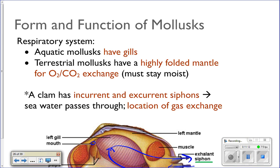The respiratory system: molluscs have gills. Aquatic molluscs all use gills to breathe. Terrestrial molluscs have their mantle highly folded, and they rely on that folded mantle for gas exchange — but they have to remain moist for that to work. If they get too wet, they can actually drown.